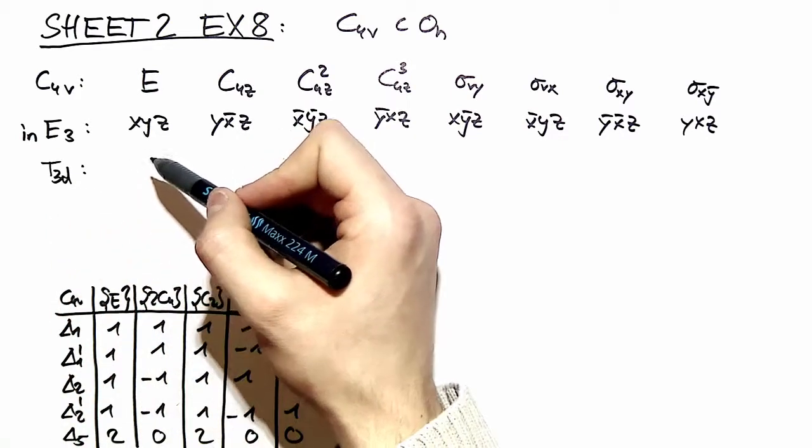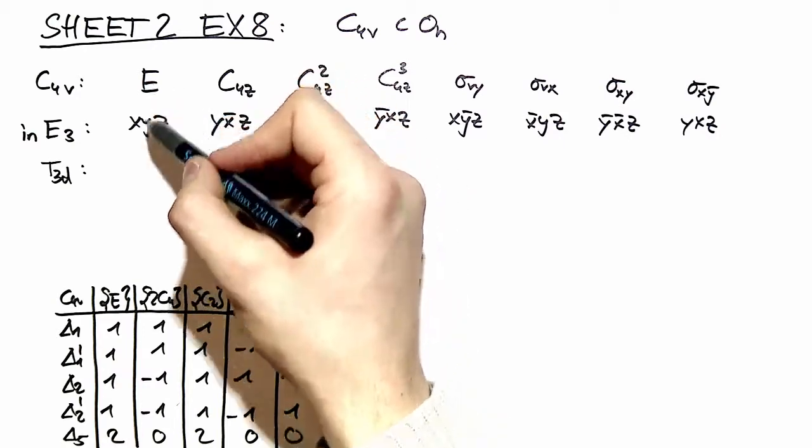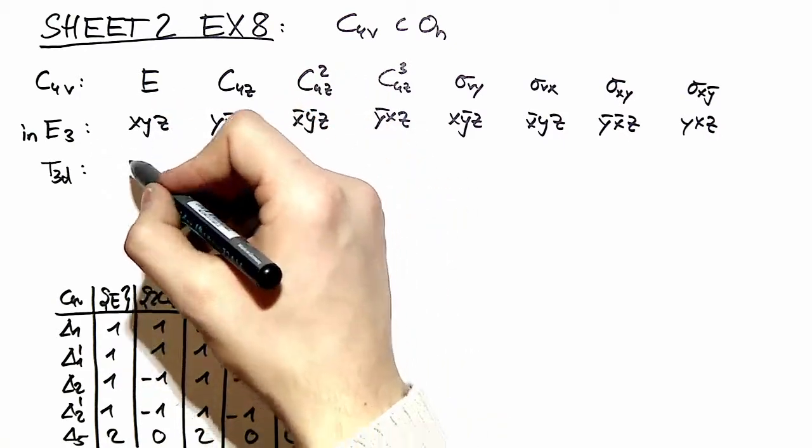It means that we take an arbitrary vector in three dimensions and see which matrix elements correspond to transforming that vector into the new vector.